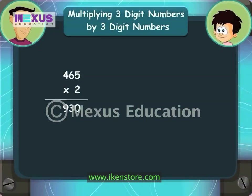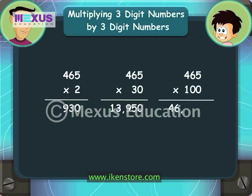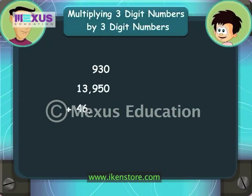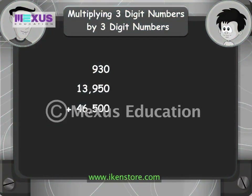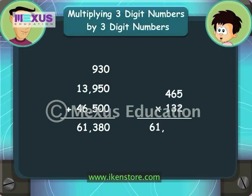465 multiplied by 2 is 930. 465 multiplied by 30 is 13,950. 465 multiplied by 100 is 46,500. Now I will add all 3 numbers together: 930 plus 13,950 plus 46,500 is 61,380. So that means 465 multiplied by 132 gives 61,380.